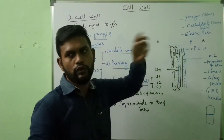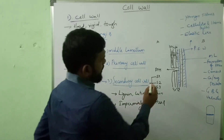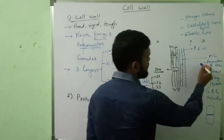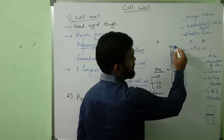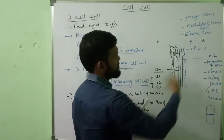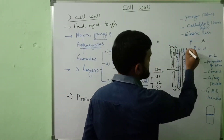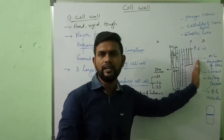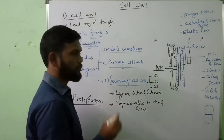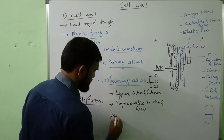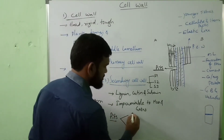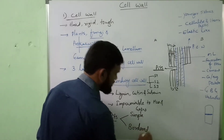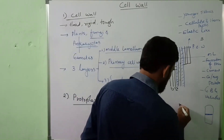Pits are useful in exchange of cellular contents from one cell to another. The secondary cell walls on both sides have S1, S2, and S3 zones. Pits are mainly of two types: simple pits and border pits.